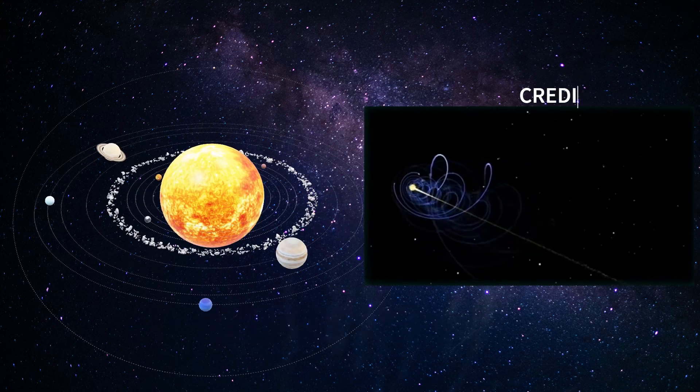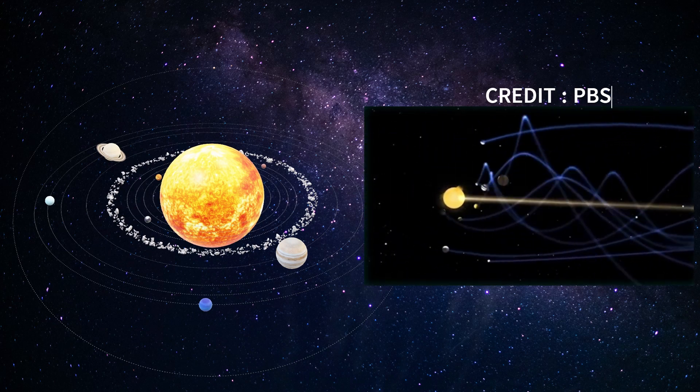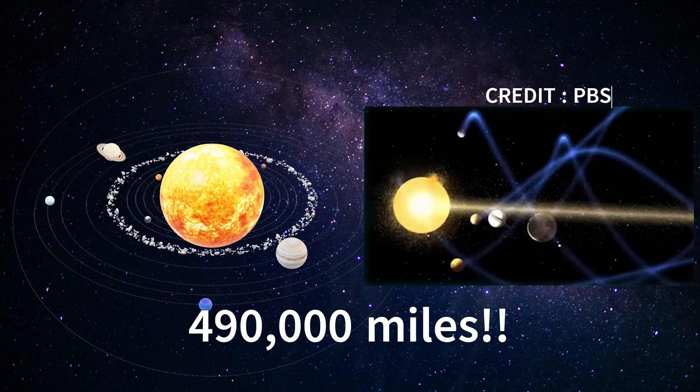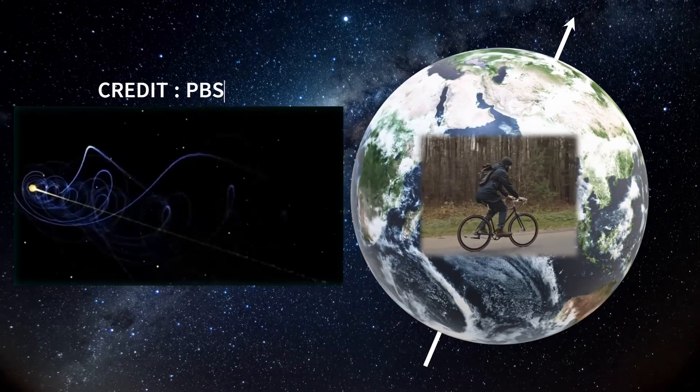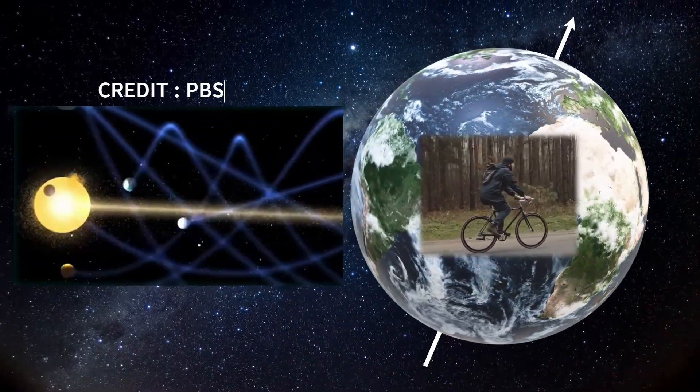Our entire solar system orbits the center of the Milky Way galaxy at 220 km per second, or 490,000 miles per hour. We are oblivious to the immense speed at which we are moving through space.